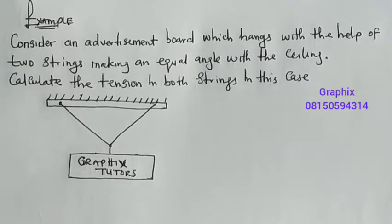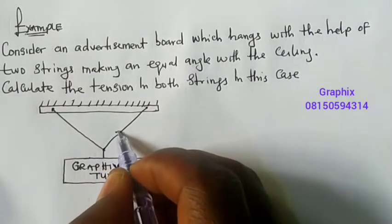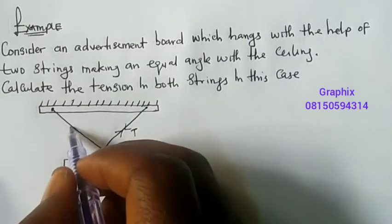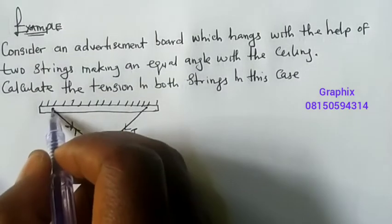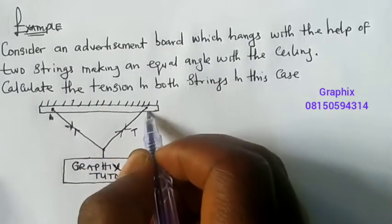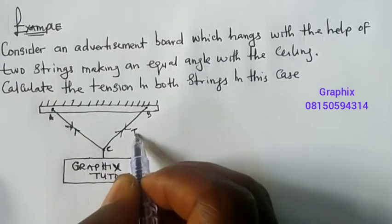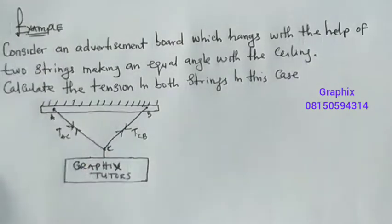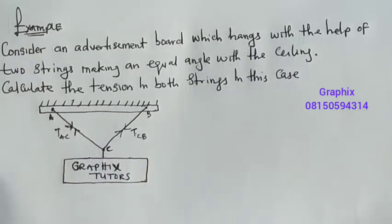Whenever you place a load on a string, the string develops a tension. So the tension on that string — we'll call this tension T1 and this tension also T. If this is point A where you attach the first string, and point B where you attach the second string, and where both strings meet is point C, then I'll call this tension T_CB and this one T_AC — tension along CB and tension along AC.